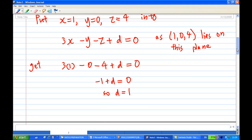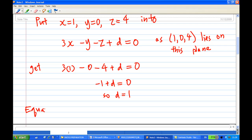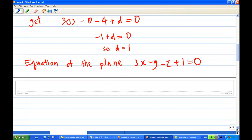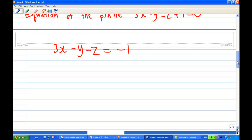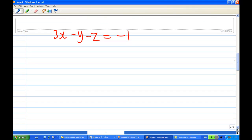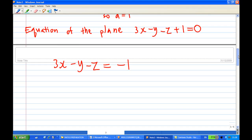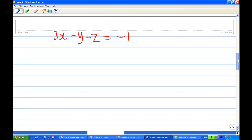Therefore, the equation of the plane in this case is 3x - y - z + d, where d is 1. And usually we are writing in this way: 3x - y - z = -1 as the equation of the plane. So this is our answer, question 3b part 2.